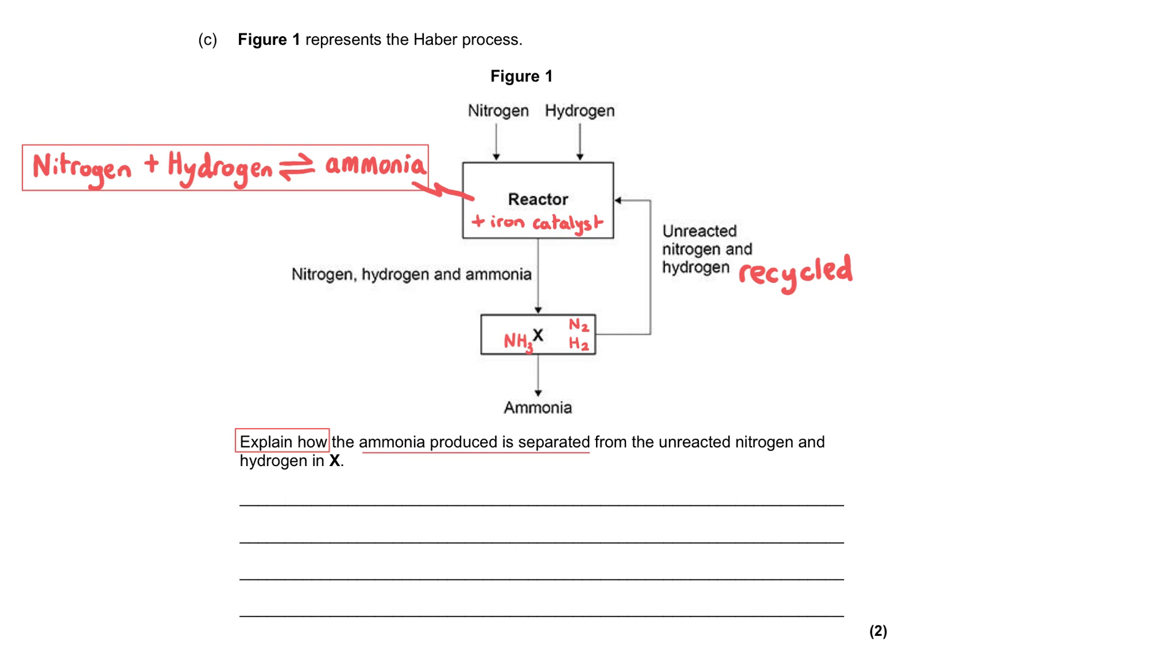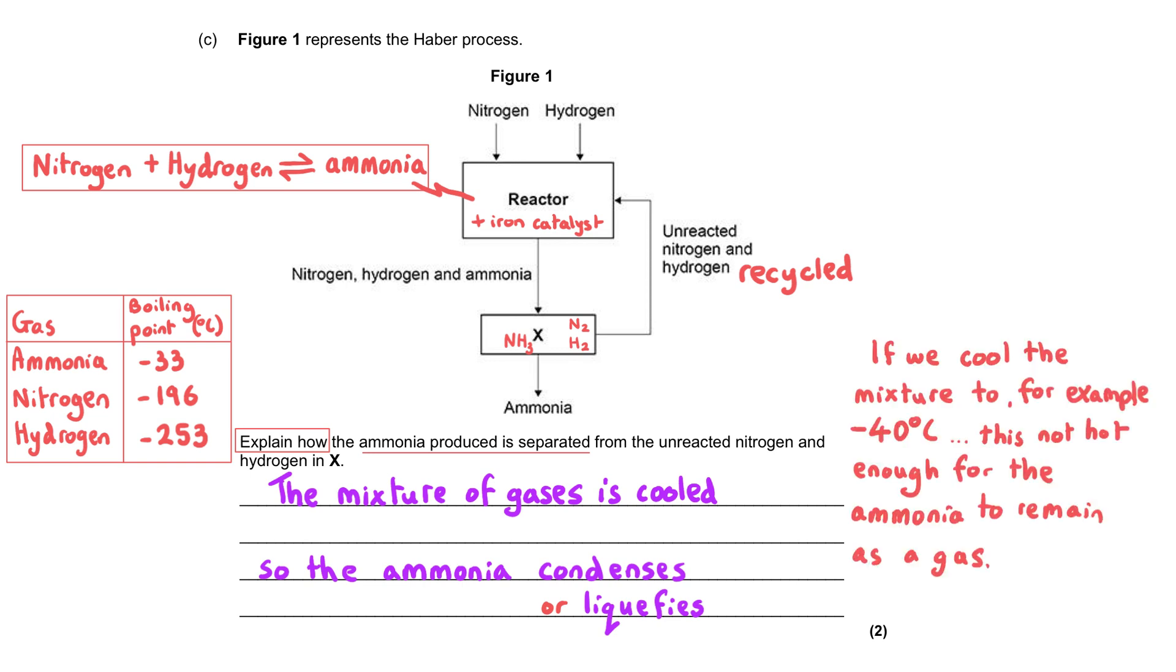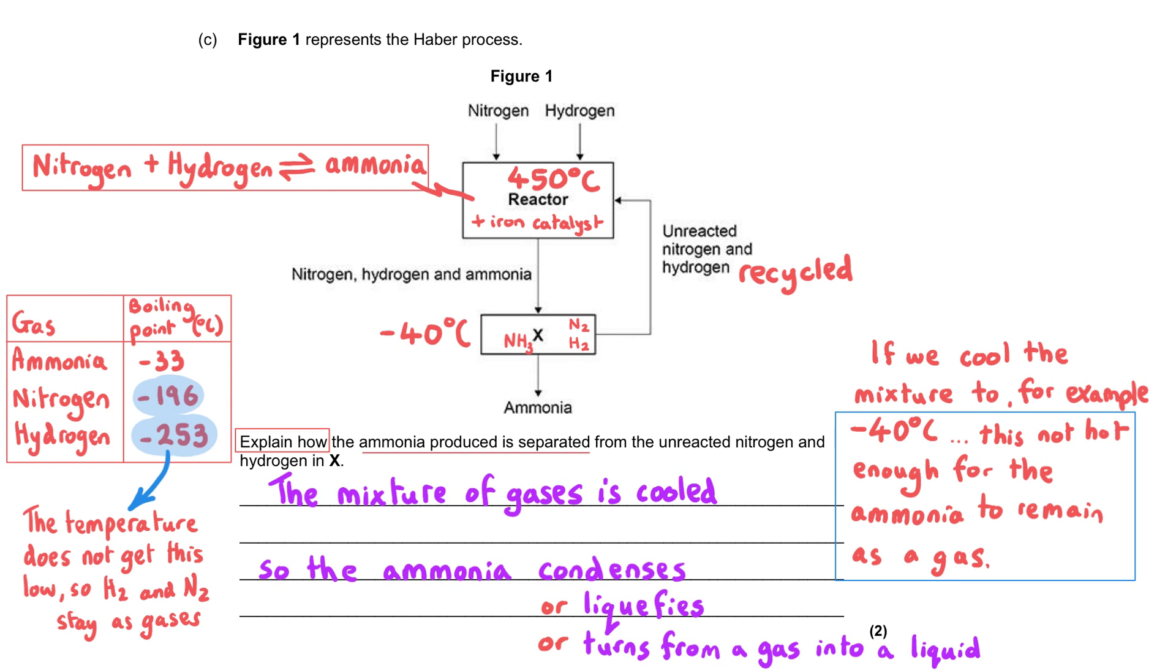The process occurring in X works because we've got three gases that have all got different boiling points. When we cool these gases down, the one that has the highest boiling point is the one that is going to condense. Ammonia has the highest boiling point out of all three of these gases. When we drop the temperature down from around 450 degrees C that it was in the reactor, we keep lowering it. Once the boiling point of ammonia is reached, the temperature is not high enough to keep that ammonia as a gas anymore, and so the ammonia turns into a liquid.